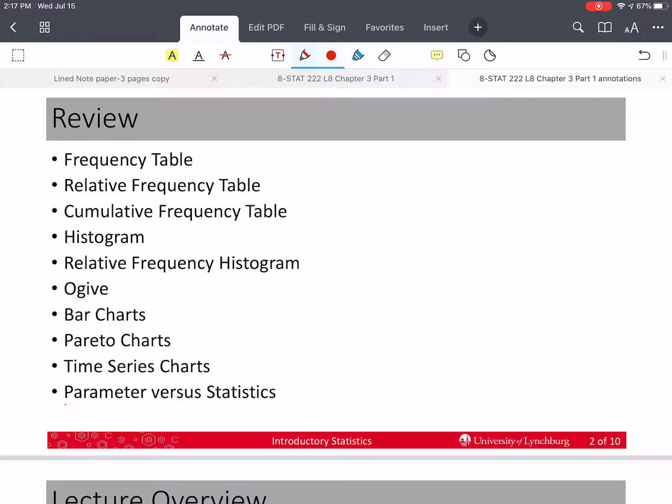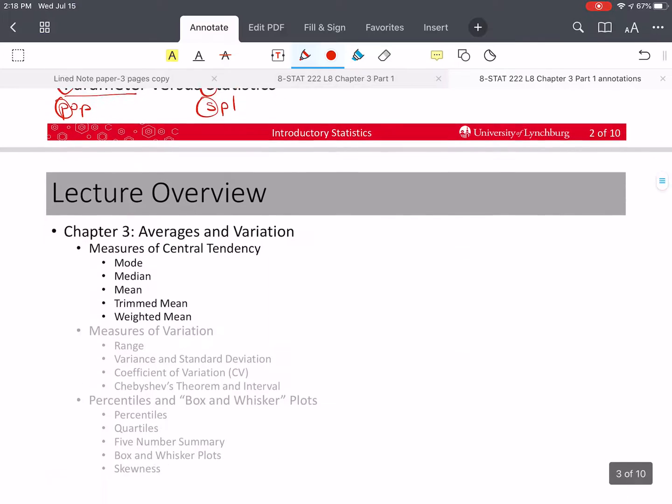Now I want to remind us of the difference between a parameter and a statistic. A parameter is a characteristic about a population. Remember that the P with parameter goes with the P of population, and the S of sample goes with the S of statistics. So the same characteristic can be applied to a population, which is a parameter, or to a sample, which is a statistic.